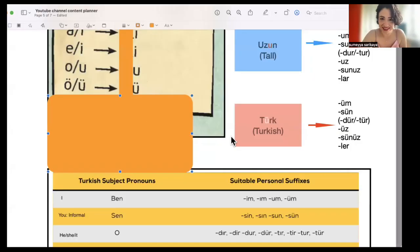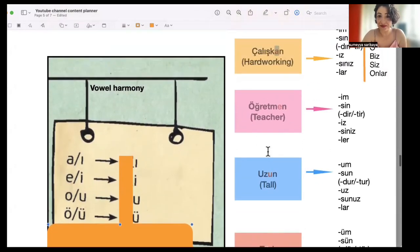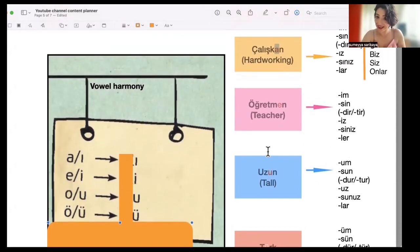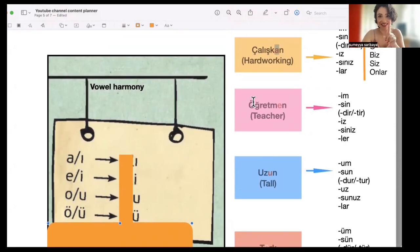And I have a question. In the examples here, there are four words and they all apply to me except one. Which one doesn't apply to me? Ben Türküm, uzunum, öğretmenim, ve çalışkanım. So which one doesn't apply to me? I will see you in the next video. I'm looking forward to your comments down below. Görüşürüz. Bye-bye.